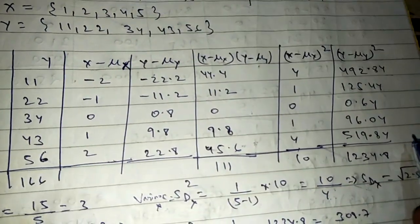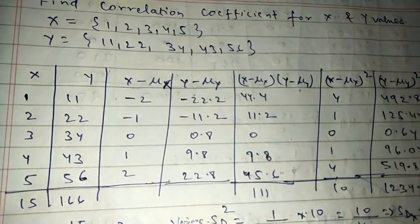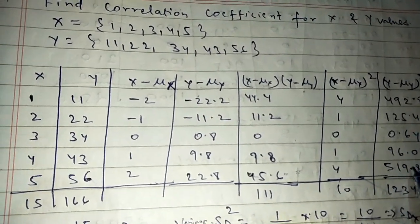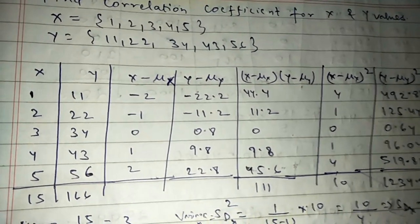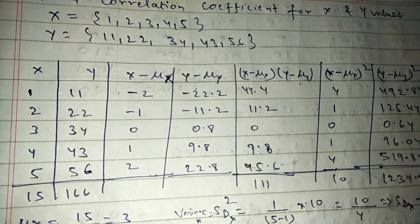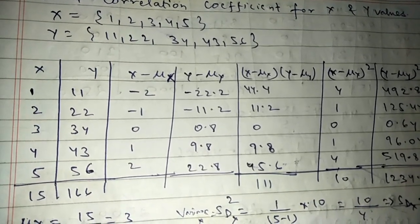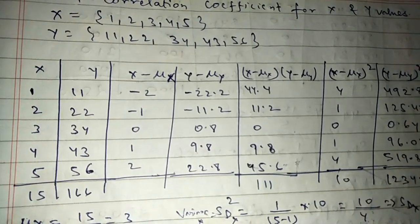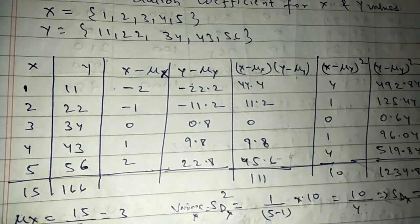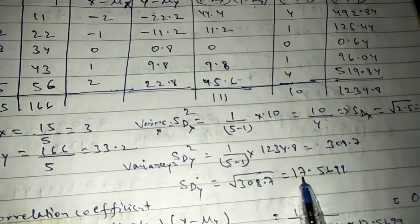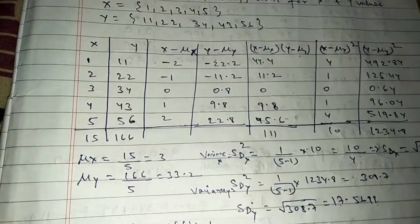After adding all values in the y column and dividing by 4, then taking the square root, you get the standard deviation. The standard deviation for y is calculated as the square root of 308.7 divided by 4, giving approximately 17.56.